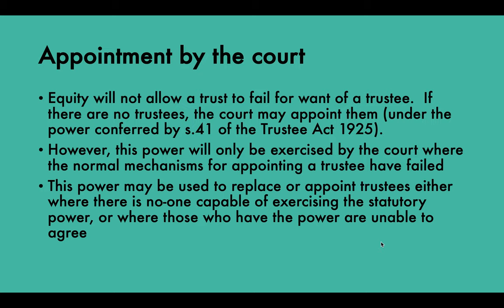For example, where one trustee obstructs the proper administration of a trust by refusing to consent to the actions of the other trustees, the court may deem it expedient to appoint a new trustee to enable the trust purposes to be performed. However, this power will only be exercised where the normal mechanism for appointing a trustee has failed — it is really a last resort. The power may be used to replace or appoint trustees either where there is no one capable of exercising the statutory power, or where those who have the power are unable to agree.